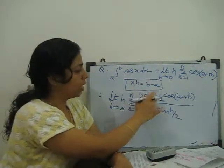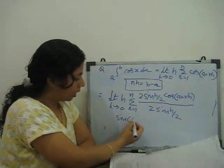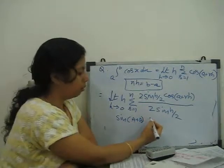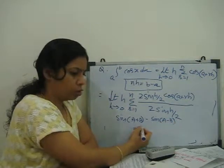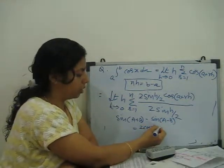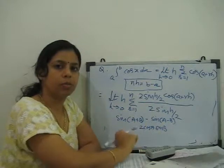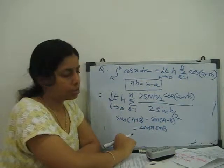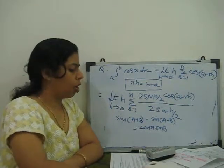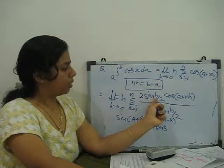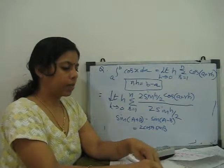Now we use the identity: 2·cos(A)·sin(B) = sin(A + B) − sin(A − B). You know that sin(A+B) = sinA·cosB + cosA·sinB and sin(A−B) = sinA·cosB − cosA·sinB. When you subtract, you get 2·cosA·sinB.